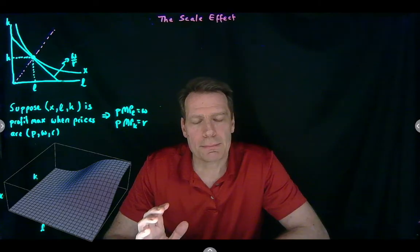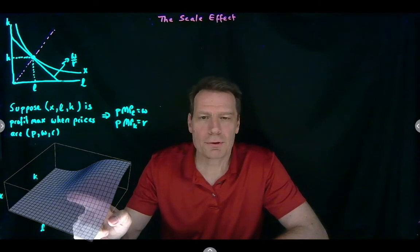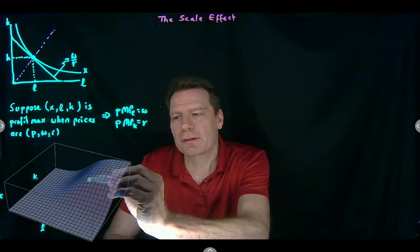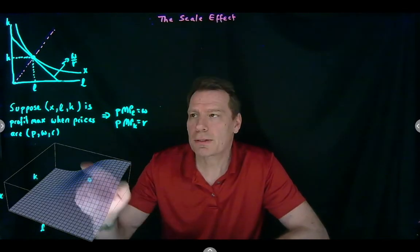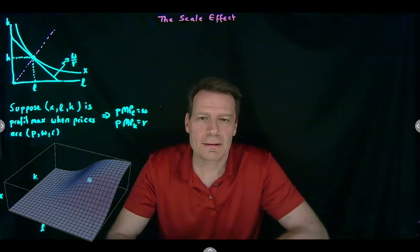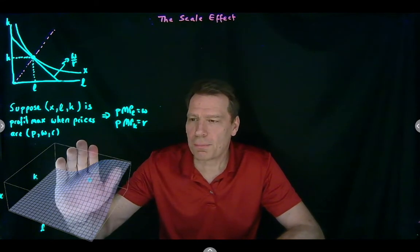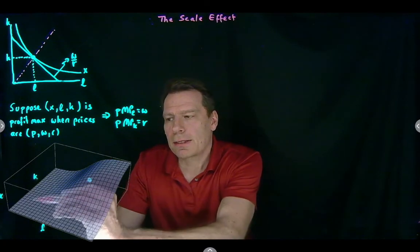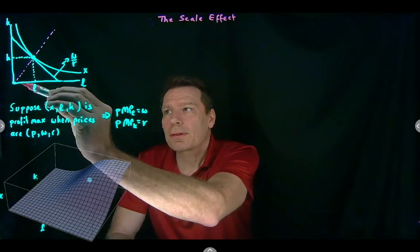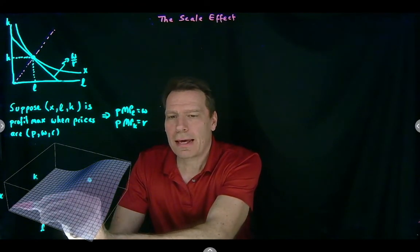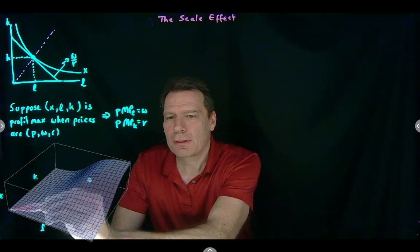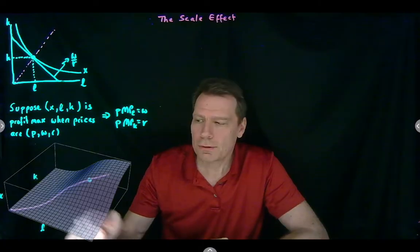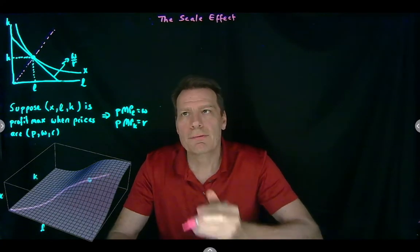To see that this is the profit maximizing production plan, we'd actually have to look at a three-dimensional picture. In that three-dimensional picture, we'd have this production plan — X, L, and K. There would be a profit sheet tangent at that production plan. This production plan would lie on this ray, and in three dimensions, it would be placed right here.